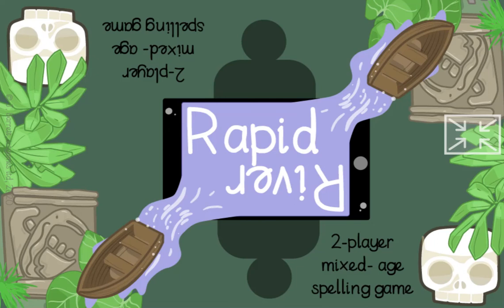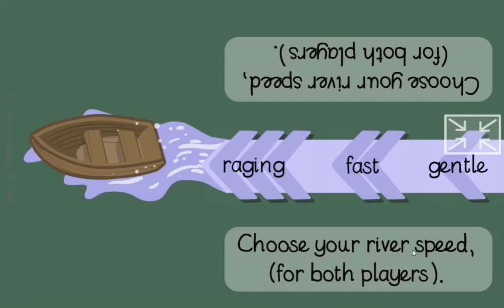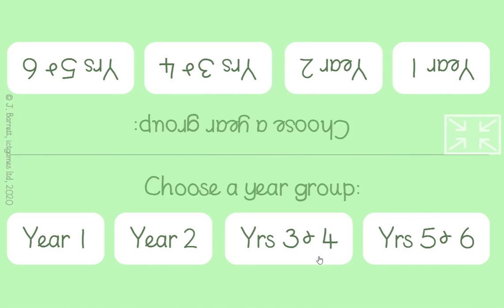This is the ICT games help video for Rapid River, a game for two players. It's really for using on a tablet - children face each other with the tablet laying on the table. This section here is where you choose how fast you want the river to go, so how quickly you can spell the word. I'm going to start with gentle, and if the game runs too slowly I can go to fast or raging. So I'm going to go gentle.